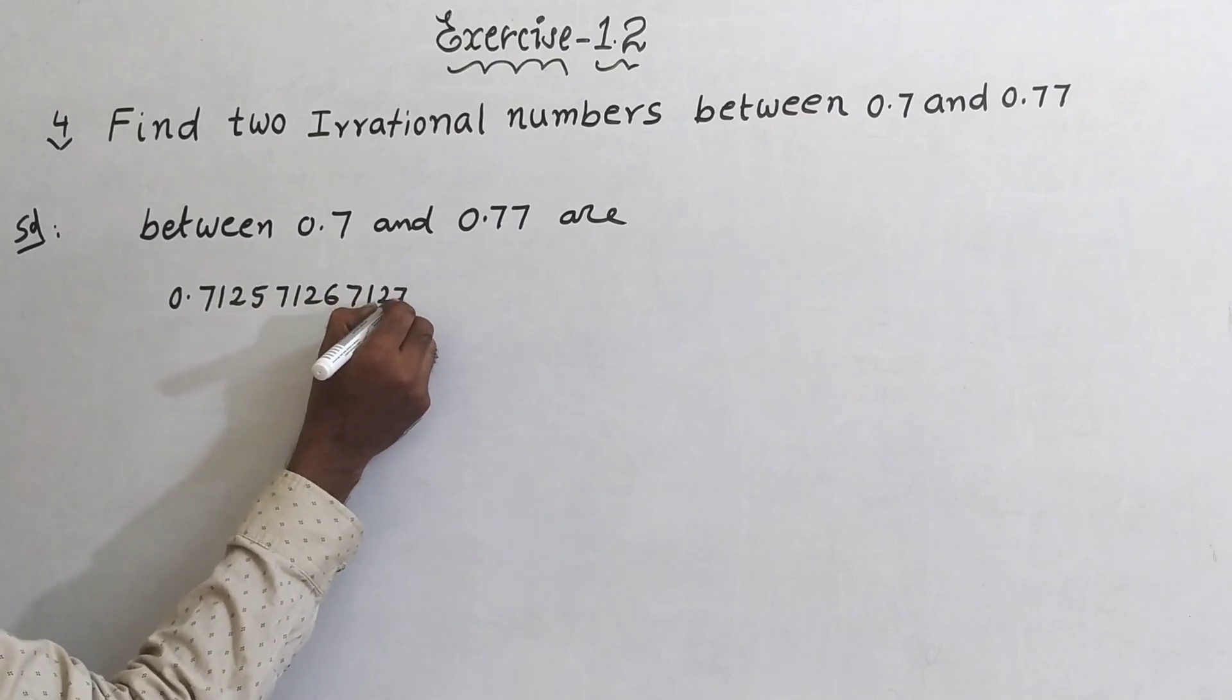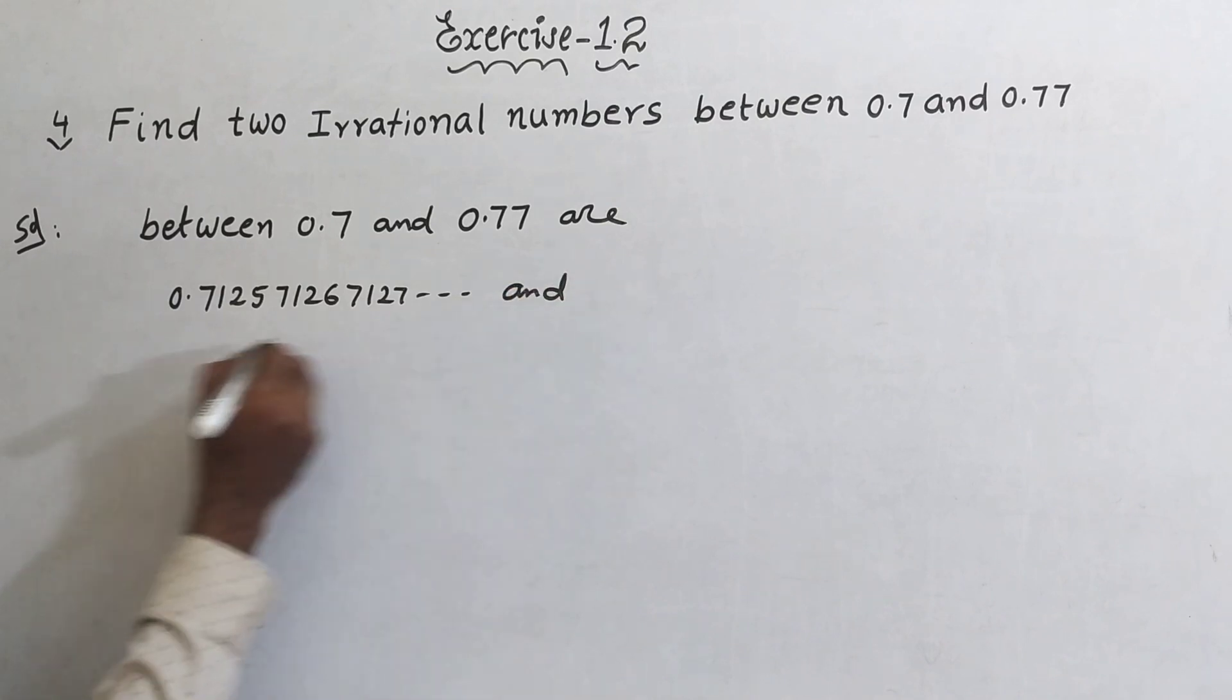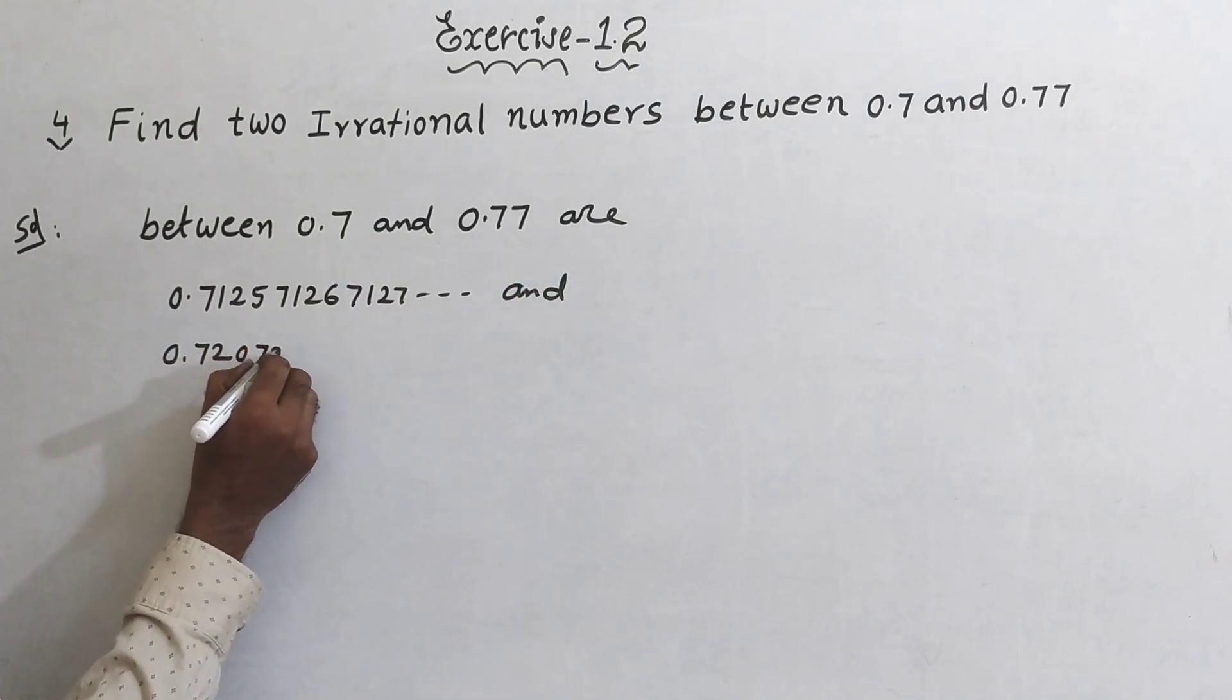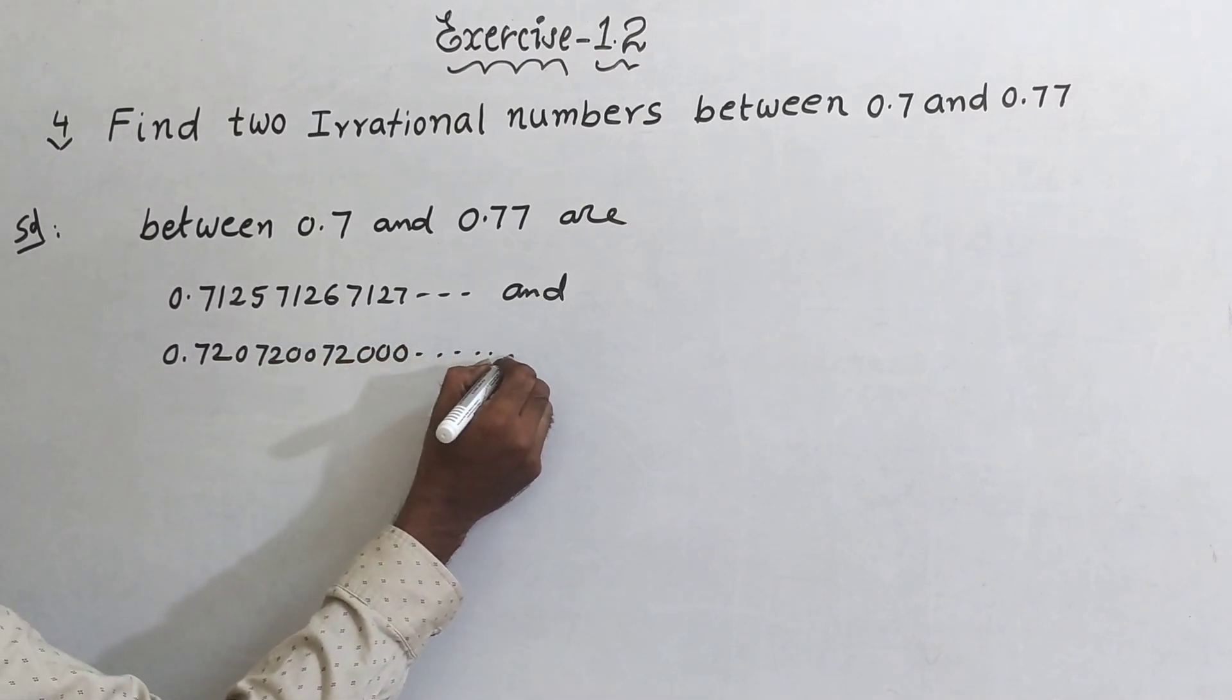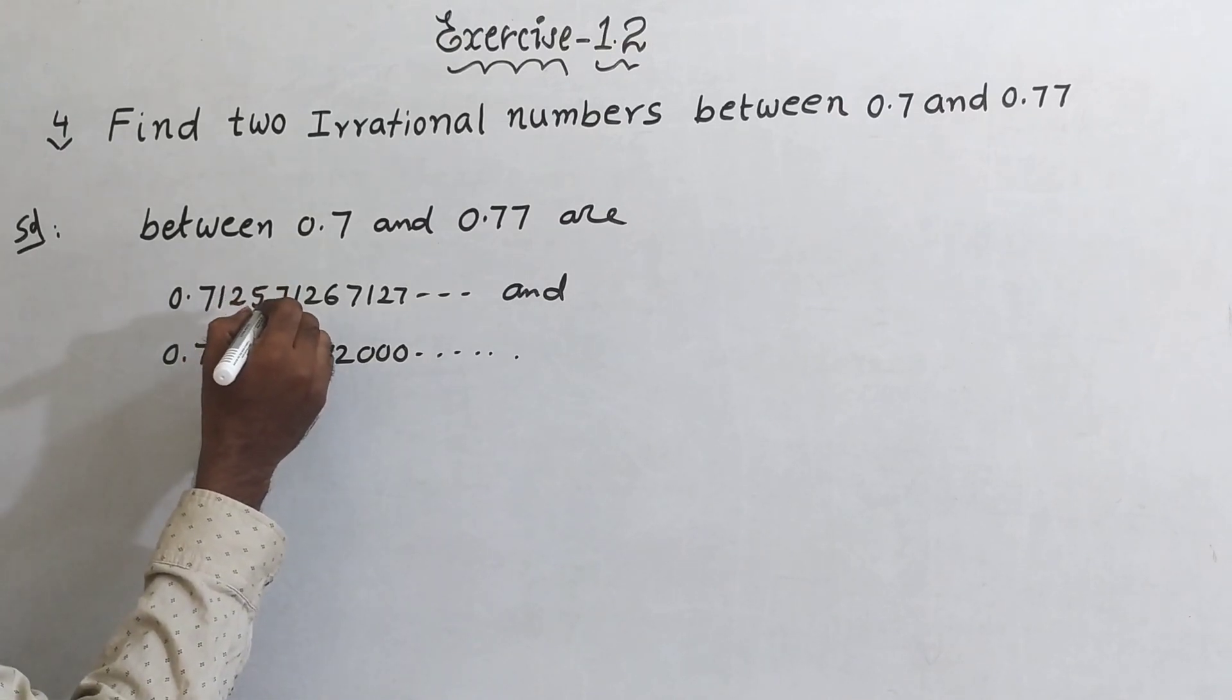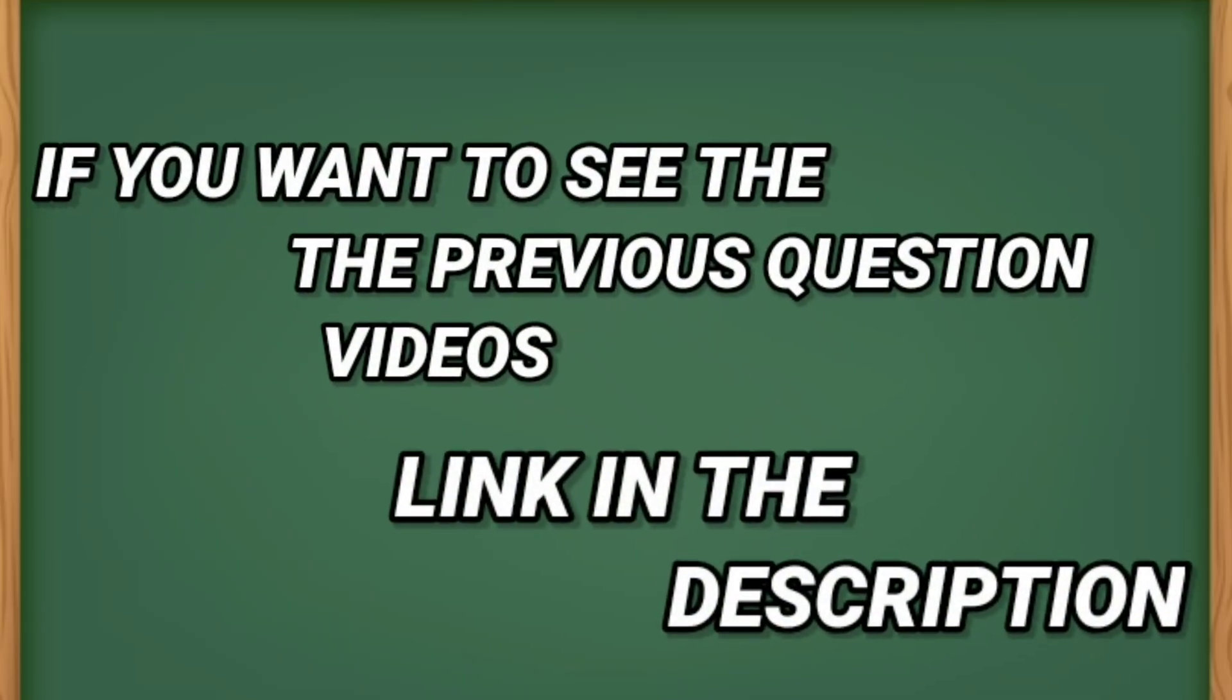And 0.720, 712000, and so on. These are the two irrational numbers between 0.7 and 0.77.